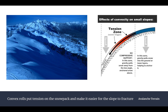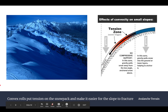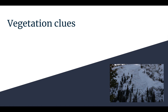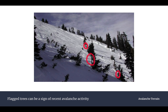Another aspect of slope topography is called a convex roll. Convex rolls create an area of tension — gravity is pulling the snow onto the slope on one side and pulling it off the slope on the other. The tension between those forces creates a tension zone that makes it much easier for the snowpack, if it were a slab, to break and trigger an avalanche. Convex rolls put tension on the snowpack and increase avalanche risk.